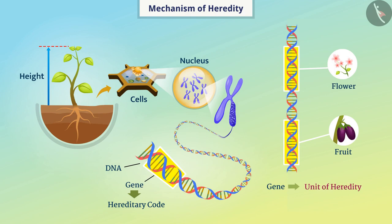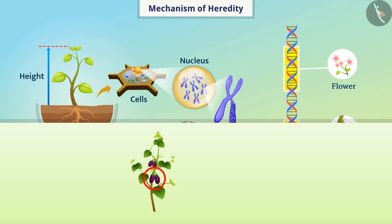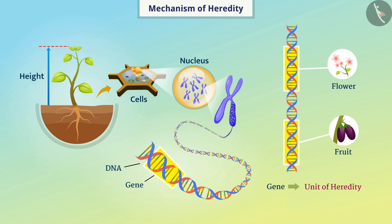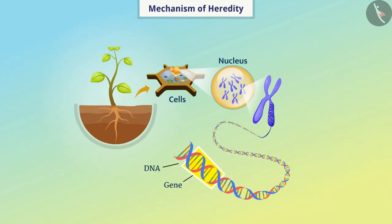The code of every character is stored in the form of genes in the DNA. Therefore, characters are transmitted from one generation to the next by transmitting the DNA through reproduction. That is why we call DNA the hereditary material. In the cell, DNA forms thin long thread-like structures called chromosomes. As the gene is a specific part of DNA, it is also a specific part of the chromosome.